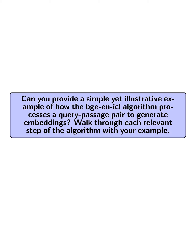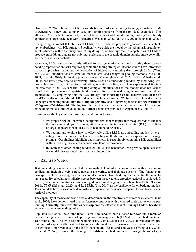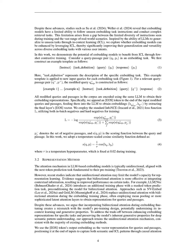Can you provide a simple yet illustrative example of how the BGENICL algorithm processes a query-passage pair to generate embeddings? Walk through each relevant step of the algorithm with your example. The BGENICL algorithm processes a query-passage pair through a series of structured steps. For instance, consider a query-passage pair where the query is 'What are the benefits of exercise?' and the passage is 'Exercise improves physical health, mental well-being, and longevity.'